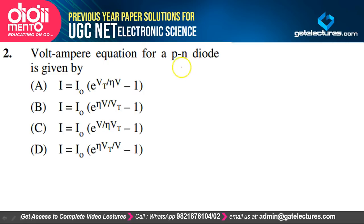The volt-ampere equation of a p-n junction diode: option C is the correct answer.